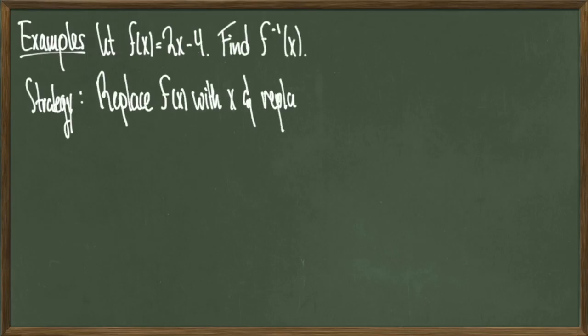Now let's do some more interesting examples. Let f of x equal 2x minus 4, and let's find f inverse of x. There is a strategy to follow here. Basically what we're going to do is look at our original function. Everywhere I see the symbol f of x, I'm going to replace it with the letter x, and everywhere I see the letter x, I'm going to replace it with f inverse of x. Once I've made these substitutions, all I have to do is solve for f inverse of x.